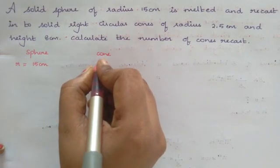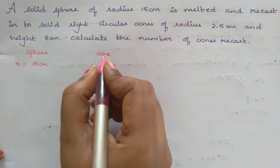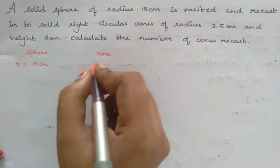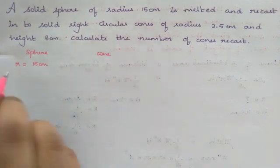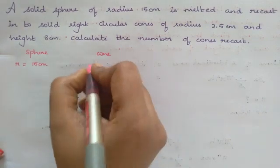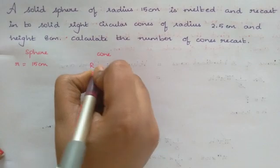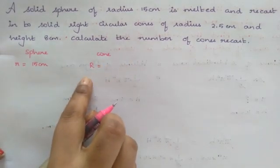For a cone, it's going to be again radius and height. But we are going to write it in different notation so that it is easy for us to differentiate between both the radius and height. Let me write it with capital R. Again, it's going to be the radius of the cone.